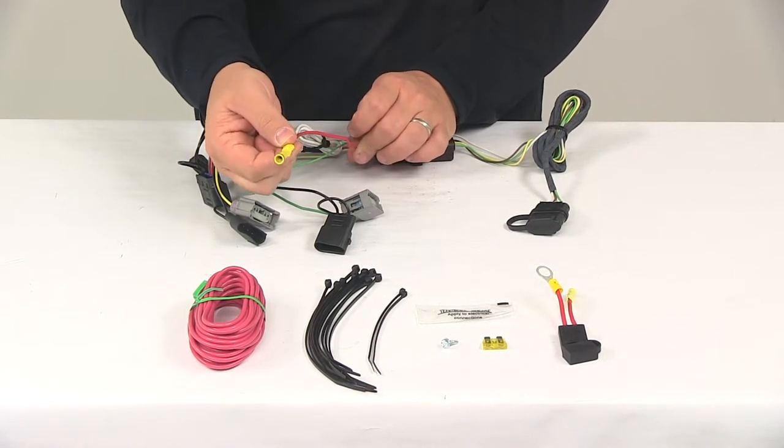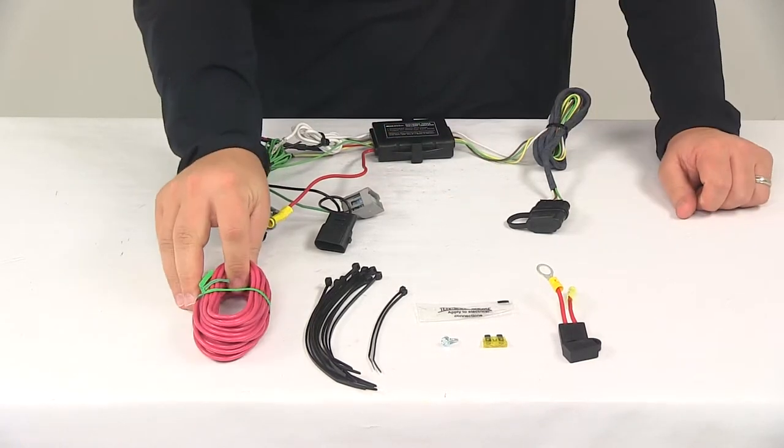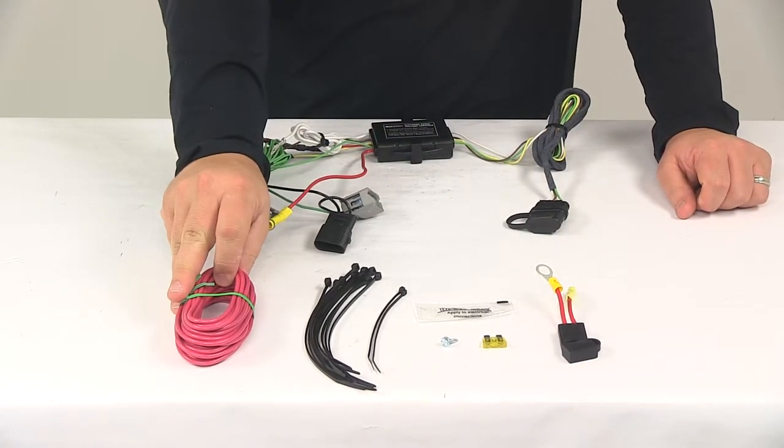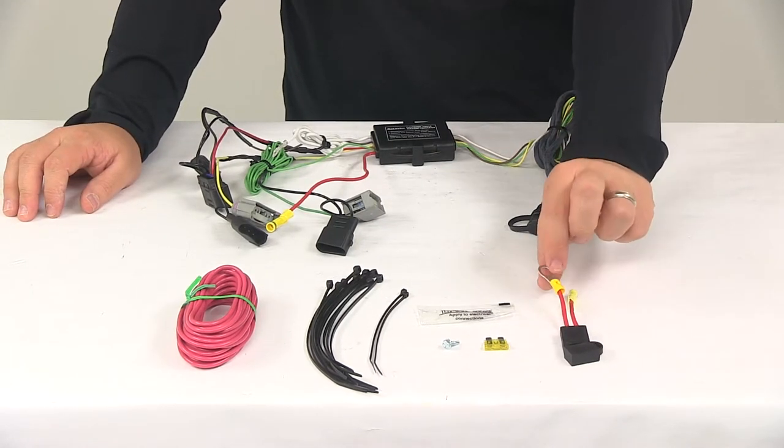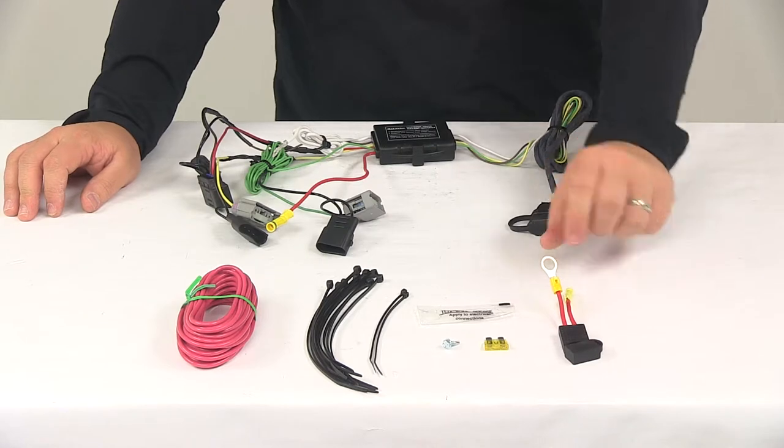So what you do is you would connect this wire to one end of the bundle. The other end of the bundle runs to the vehicle battery, connects to one half of the fuse holder. The half that has a ring terminal on it is going to get connected to the positive post of the vehicle battery.